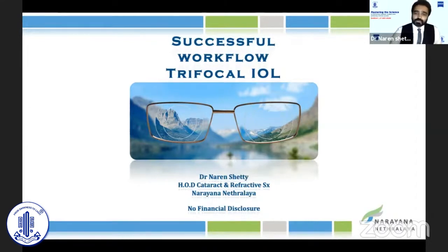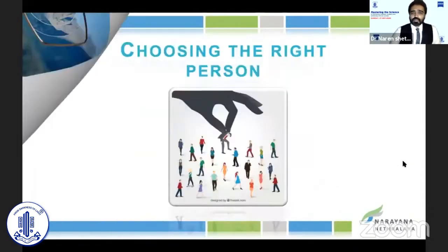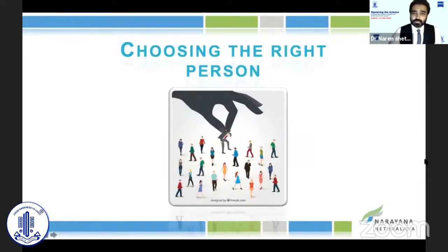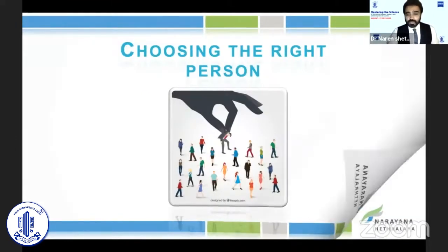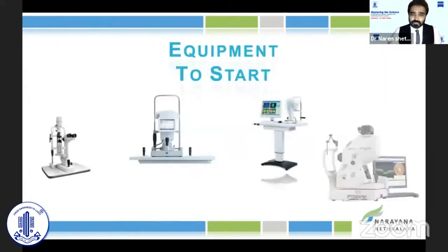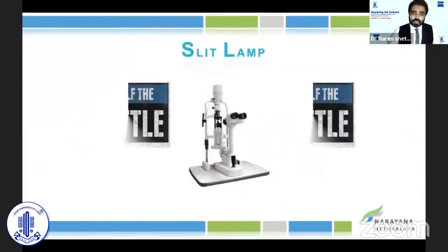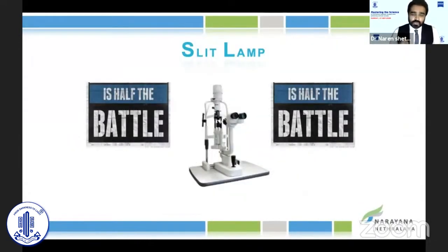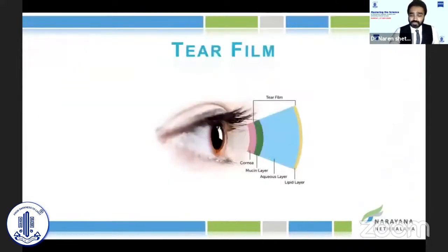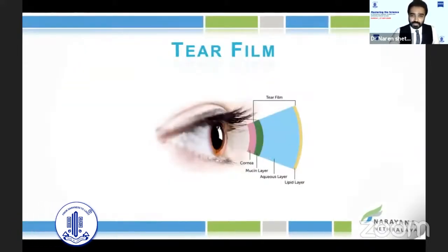To achieve this, first and foremost is choosing the right patient, which is very, very crucial. For this, we need certain sets of equipment. If you do a good slit lamp examination, you have just won half the battle. So make sure you do not miss any kind of abnormalities. Look at the tear film also. Make sure the tear break and shimmer are normal.